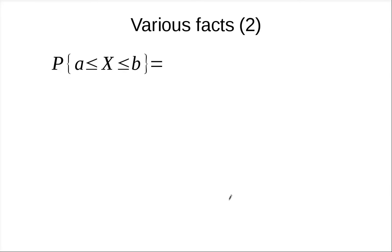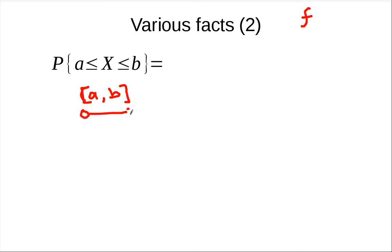Now, given the probability density function f, if you want to figure out the probability that a random variable belongs to a set between A and B, you take the integral from A to B of f(x) dx. For continuous random variables, whether you include or exclude the endpoints A and B doesn't really matter — we'll see that later.